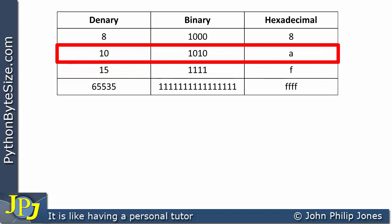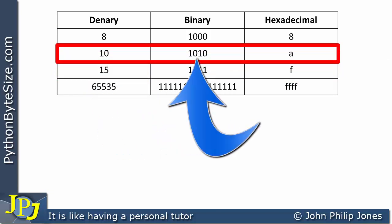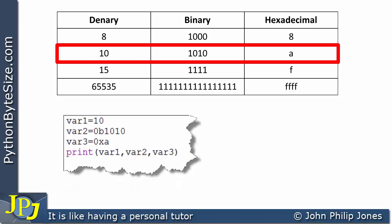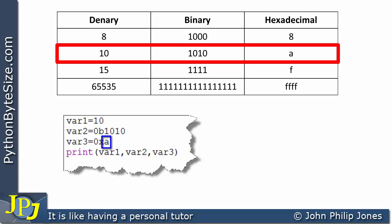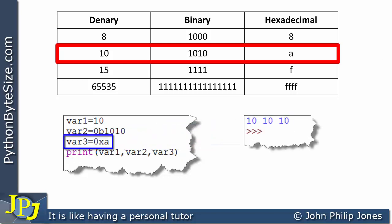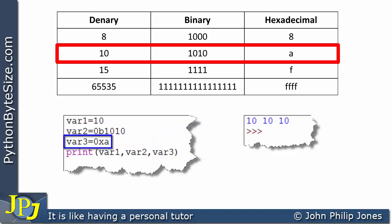Similarly, denary 10 is assigned as 10, its binary form is 0b1010, and its hexadecimal form is 0xa. When all three are printed, Python outputs 10 in each case — it converts to denary output even if you assigned a hexadecimal value.